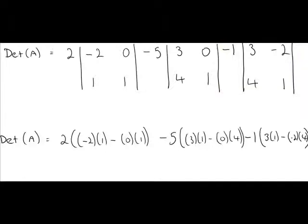At this point, we complete our multiplication and any addition and subtraction. We have 2 by minus 2 by 1 is minus 2. Minus 0 gives us minus 2. We have minus 5 multiplied by 3 minus 0, which is 3. We have minus 1 by 3 minus minus 8, which is 3 plus 8, which is 11.